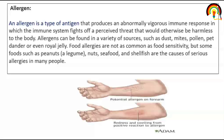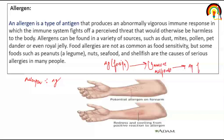So allergen kya hoga? Allergen ek tarike ka antigen hoga. Antigen ek foreign substance ki tarah act karta hai humari body ke liye. Jab antigen humari body mein enter karta hai, body immune response create kar deta hai. Immune response create karke is antigen ko body se bahar kar diya jata hai — allergen ke saath bhi same hota hai.